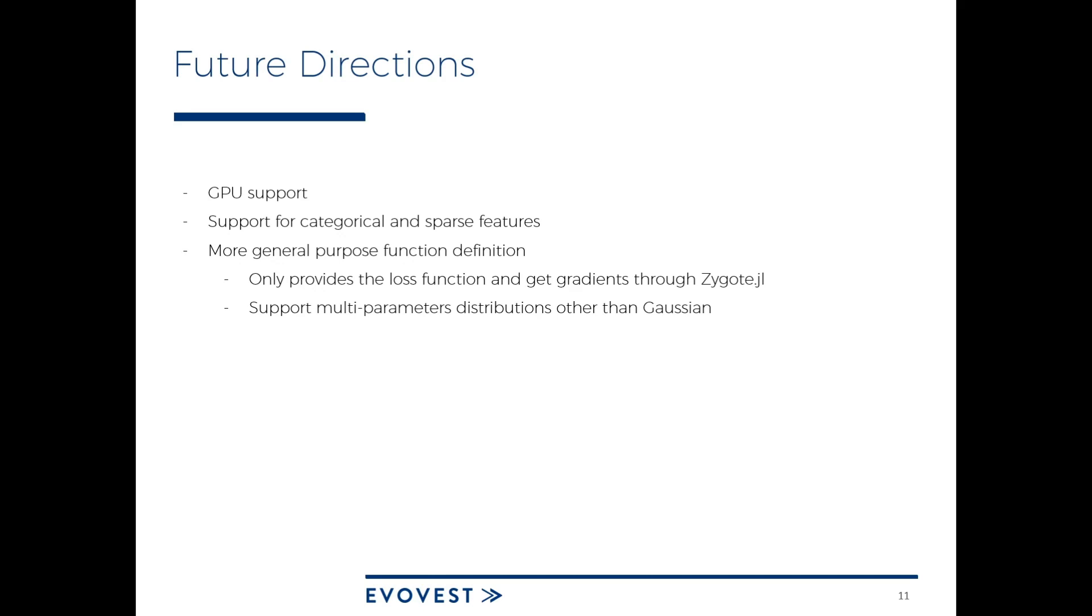And finally, expand on the supported loss functions. Right now, something that has been introduced is the support for Gaussian max likelihood. So having the optimization on both the mean and the standard deviations, the idea will have to expand that to other probabilistic distributions. So that's it for today. I hope you enjoyed the talk and thanks for attending.